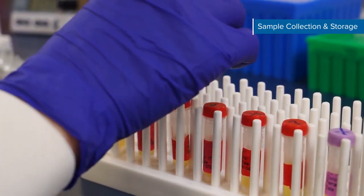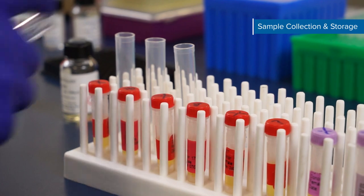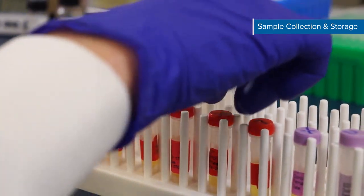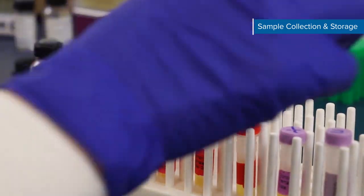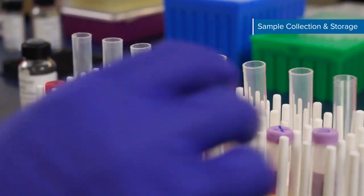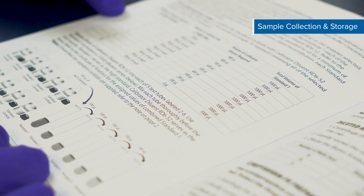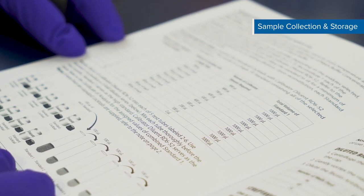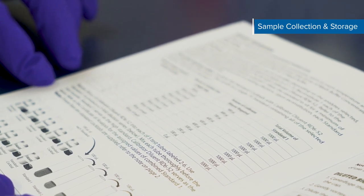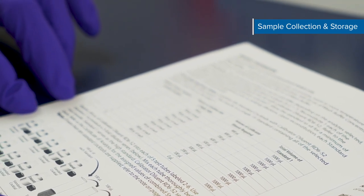It's best to collect your sample right before you begin, but samples can be stored. If you must store your sample, freeze in single-use aliquots and refer to your kit booklet for specific collection, processing, and storage instructions. We recommend avoiding repeated freeze-thaw cycles. Once samples are ready, it's time to prepare our reagents.